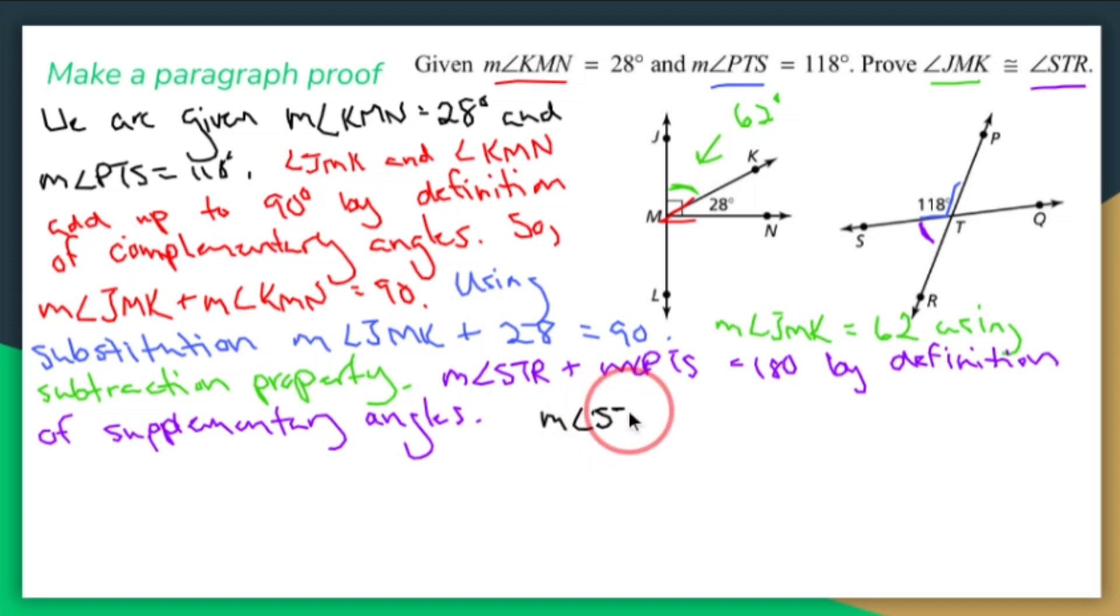Plus, let's change PTS is 118 equals 180 using substitution. If I subtract 118 from both sides, I get that the measure of angle STR equals 62 using the subtraction property of equality.